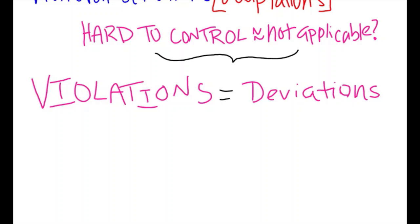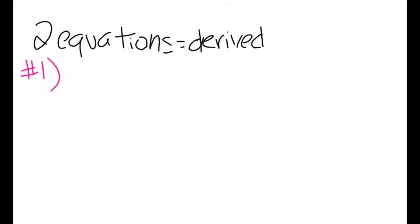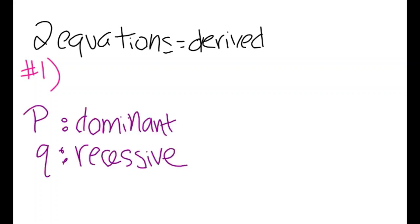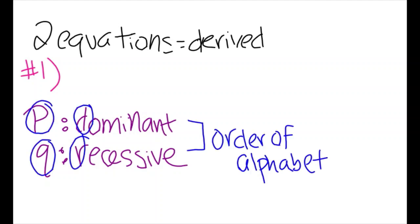Now that we understand the purpose and exceptions of the principle, let's understand its mathematical application. For this principle, we will have two equations, and the first will allow us to derive the second. In these equations, we'll be using the letters P and Q, with P representing the dominant allele frequency and Q the recessive.